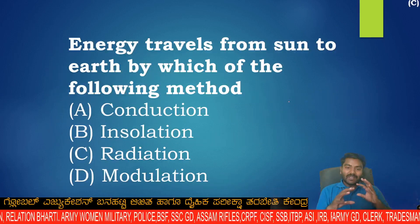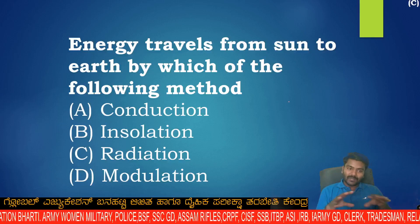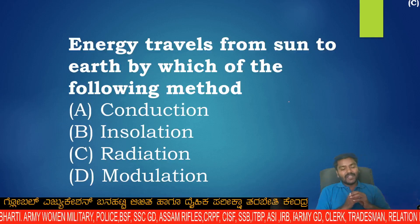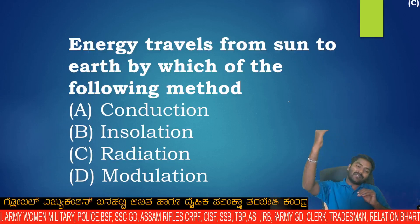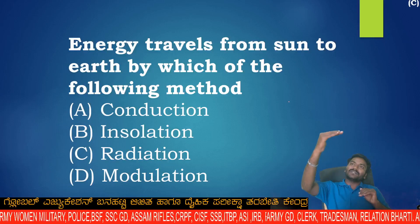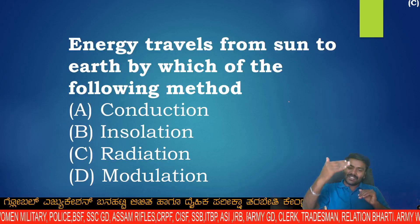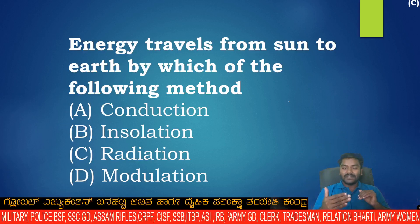Energy travels from the sun to the earth by which of the following methods? The options are conduction, insulation, radiation, and modulation.